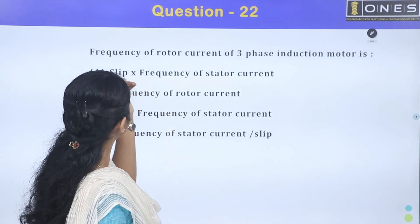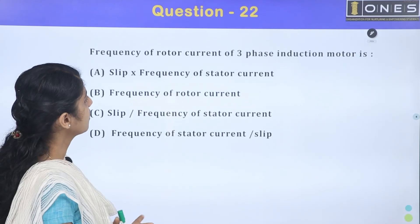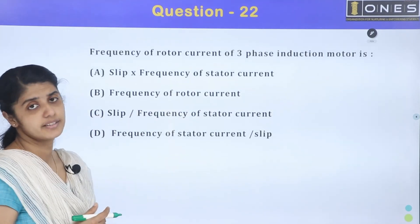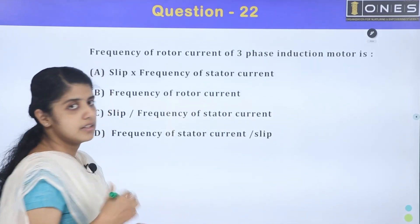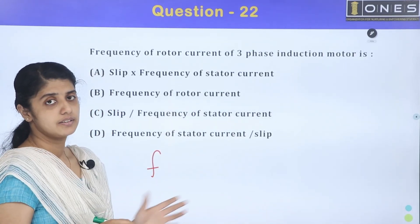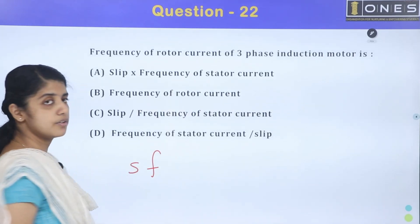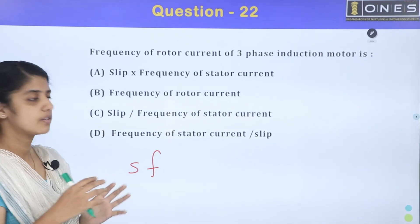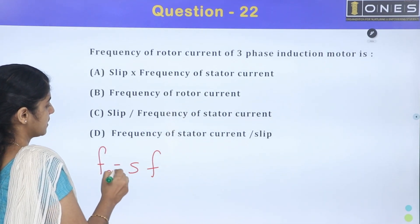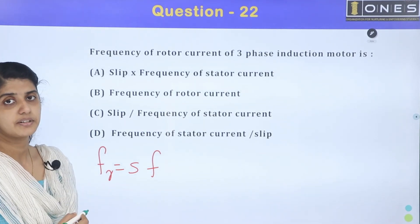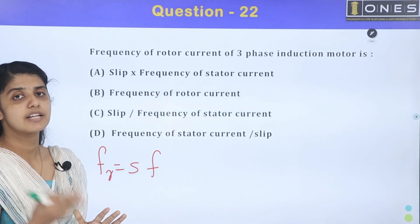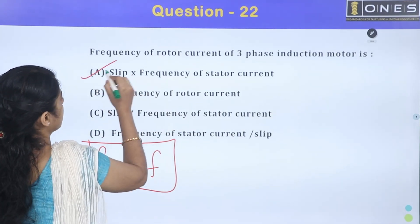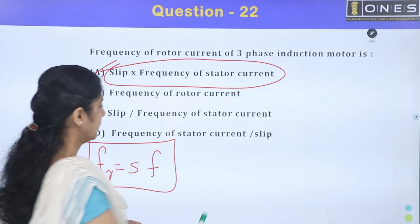Next question: frequency of rotor current of a 3-phase induction motor. The supply frequency is F, and the slip is S. The rotor frequency, Fr, is equal to S into F — slip into frequency of stator supply. So the answer is: slip into frequency of stator.